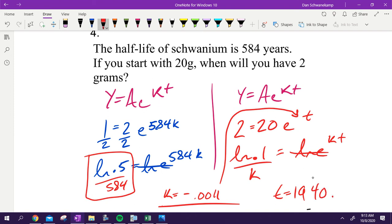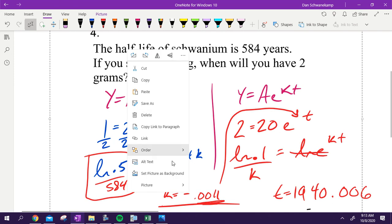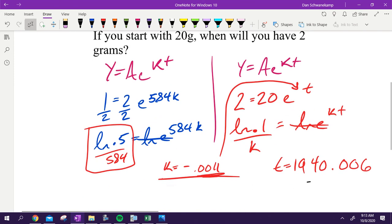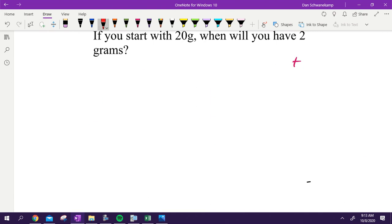1940 point zero zero six, something like that. Earlier I had a student that rounded to four decimals on her k value and she was off by 23 years. That's a lot of difference. So you cannot round. You got to leave it in your calculator, otherwise it's not going to get you what you want. Questions on half-life?